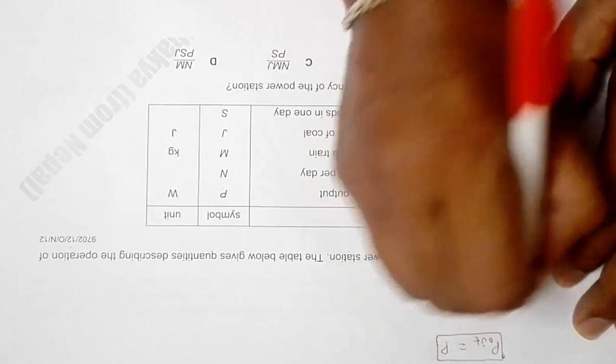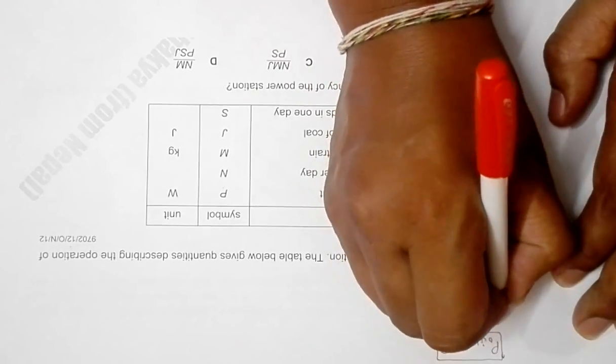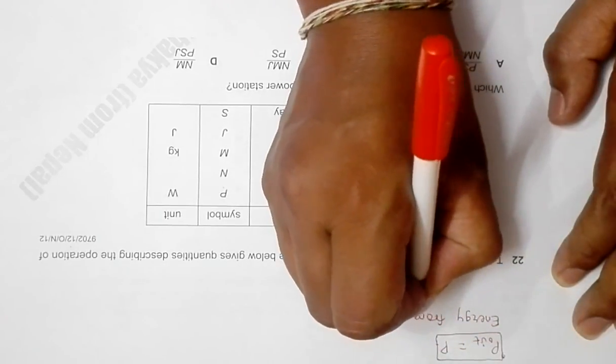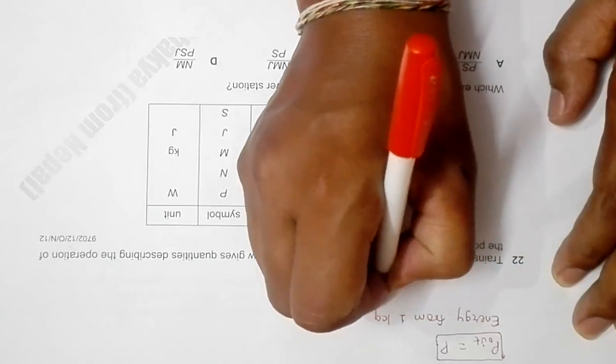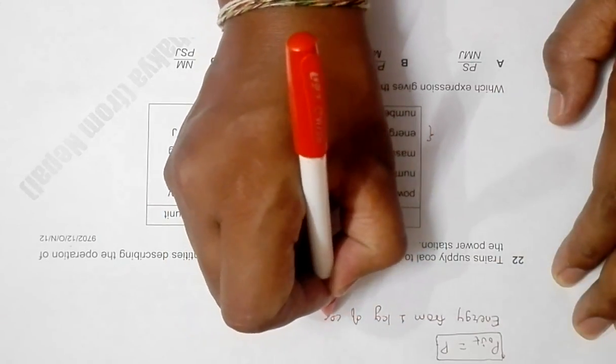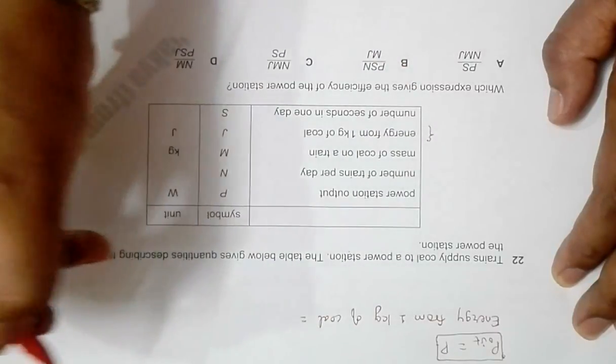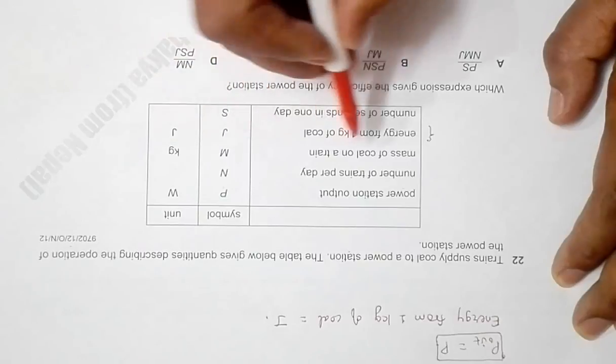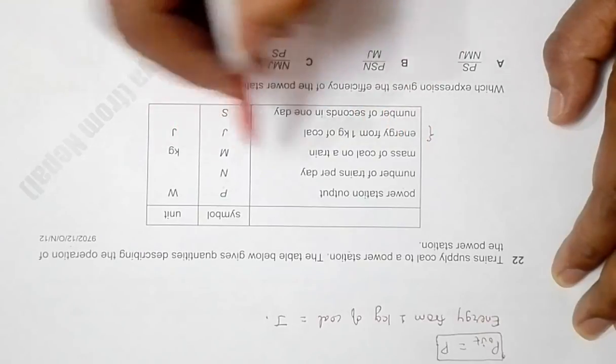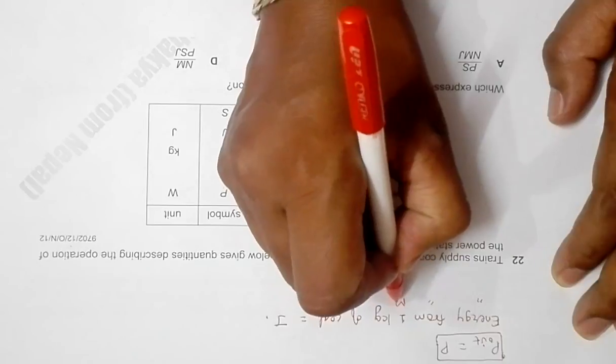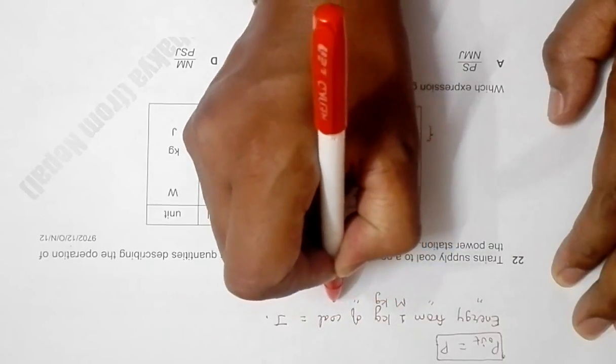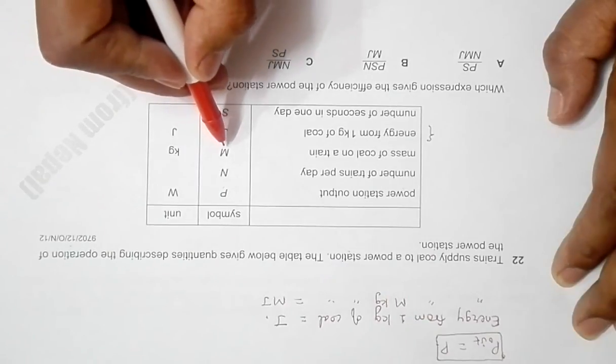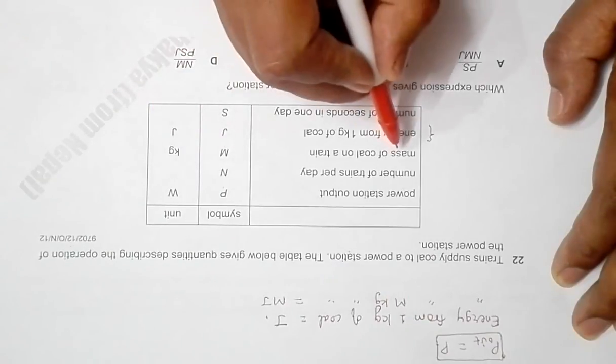From here, we have energy from one kg of coal is equal to J. That means here we have something as m kg. So energy from m kg of coal is equal to mJ. And since m kg is the mass of coal in one train...